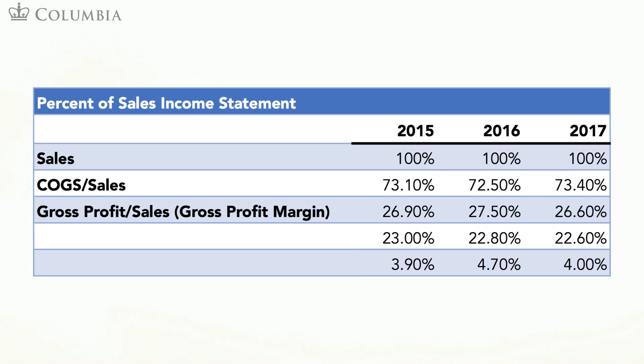Gross profit is defined as sales minus COGS, and this ratio is the gross profit over sales. For example, in 2017, the COGS to sales ratio for MANOA is 73.4%, which implies a gross profit margin of 26.6%.